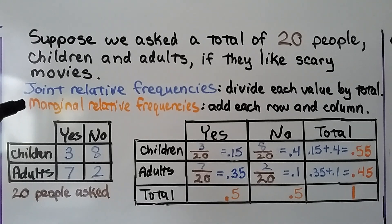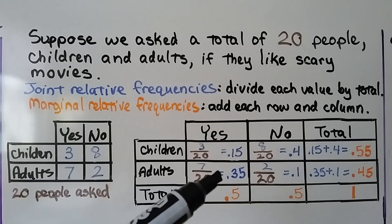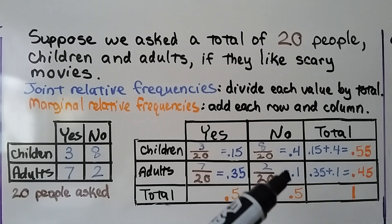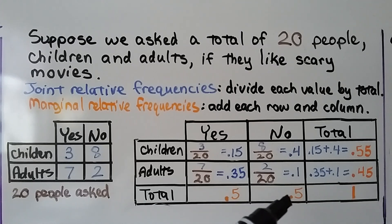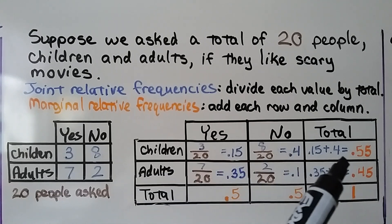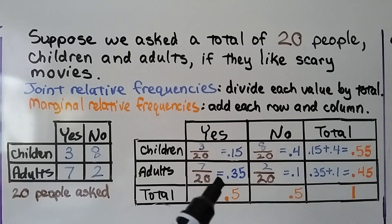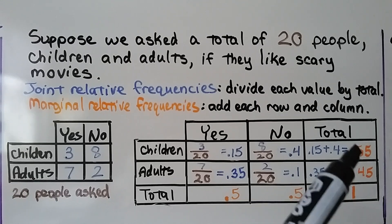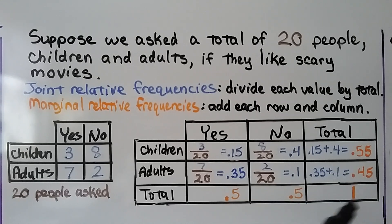For the marginal relative frequencies, we add each row and column. So, 0.15 plus 0.35 gives us 0.5. 0.4 plus 0.1 gives us 0.5. And if we add this way, 0.15 plus 0.4 gives us 0.55, and 0.35 plus 0.1 gives us 0.45. We total this and we get one whole. This box should have a 1 in it.